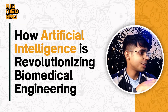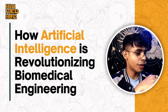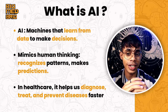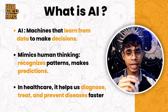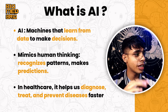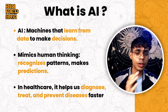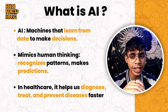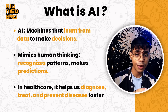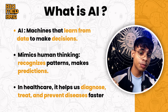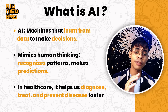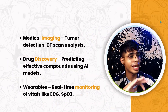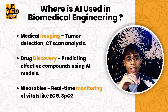Let's go with the first slide: what is AI? In simple words, AI is a machine that learns from data to make decisions and predictions. It mimics human thinking — basically a machine that could think like a human being. It recognizes patterns and makes predictions. In the healthcare domain, it is used to diagnose, treat, and prevent diseases at a faster pace.